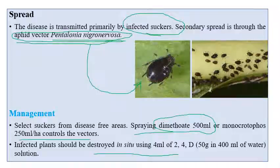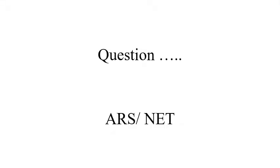For ARS or NET exams, banana crop diseases are very important. Questions will definitely come from banana bunchy top virus and its vector. Fusarium wilt is named Panama wilt because it was first reported in the Panama area. Causal organisms and symptoms of each disease are very important — make sure to learn all the causal organisms for banana diseases. That concludes this lecture on banana diseases.